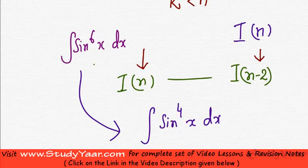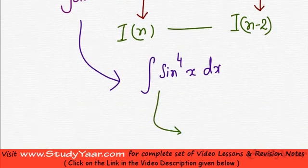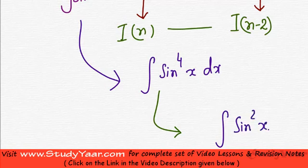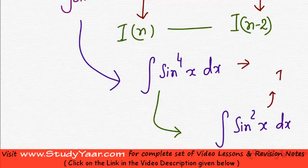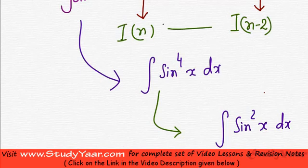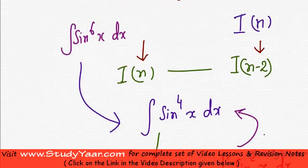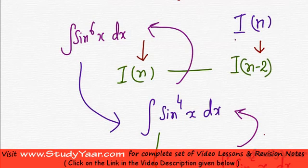You would be able to reduce this progressively into sin squared x dx, because sin⁴x is also an I of n where n equals 4, and its I of n minus 2 is sin²x. Since 4 minus 2 is 2, you can easily integrate sin²x. Therefore, going backwards, you can essentially integrate sin raised to power 6 x dx. That is the concept of a reduction formula.